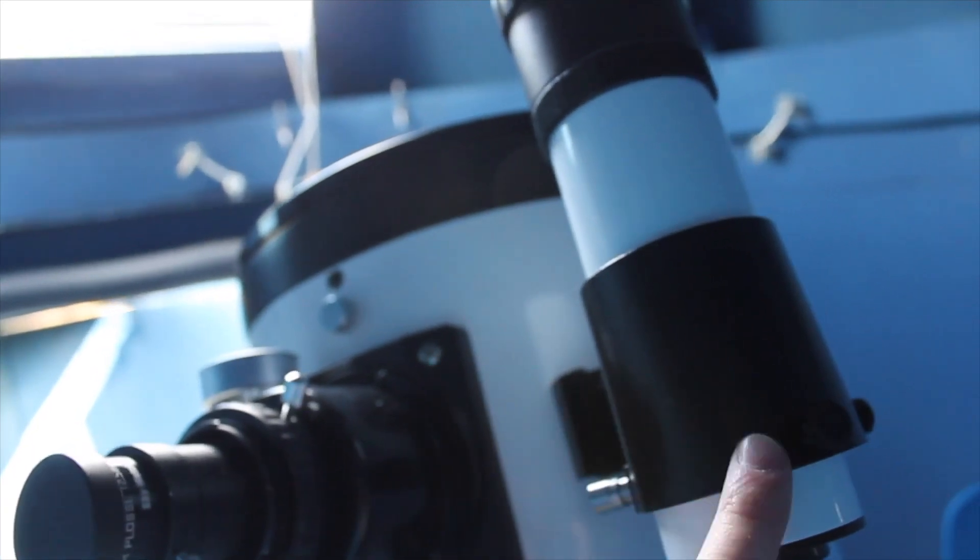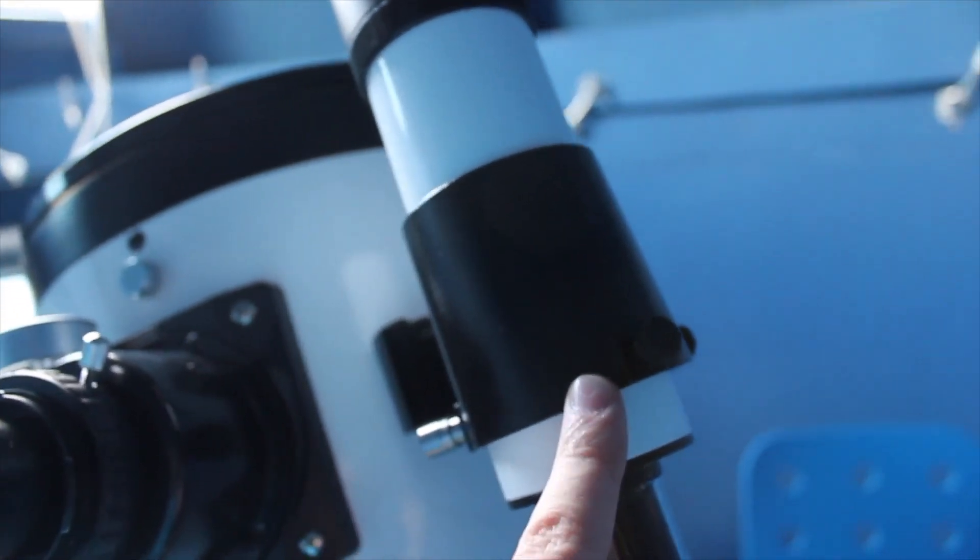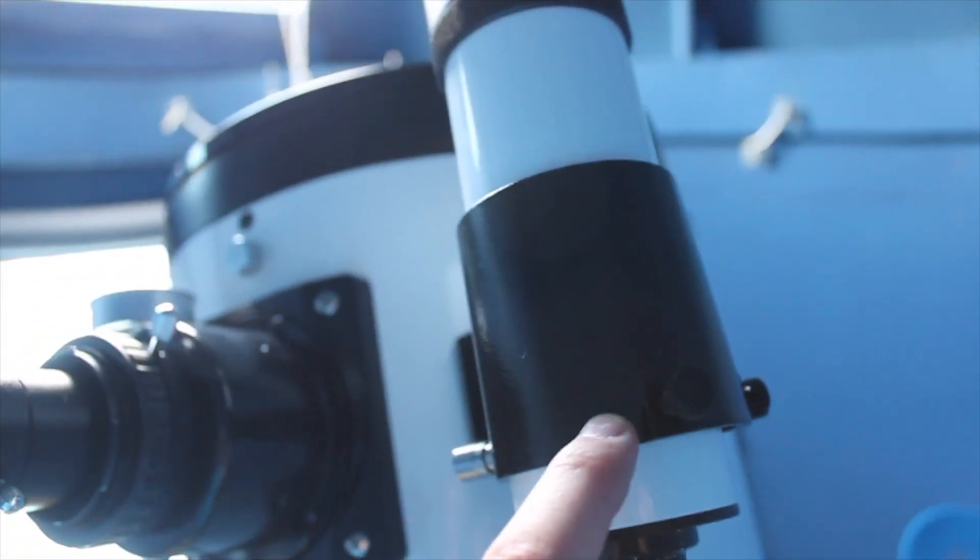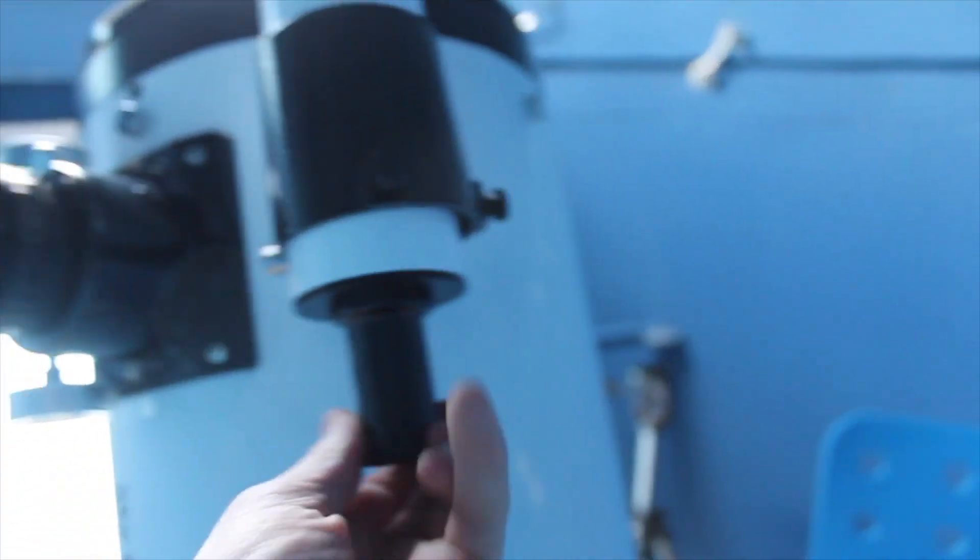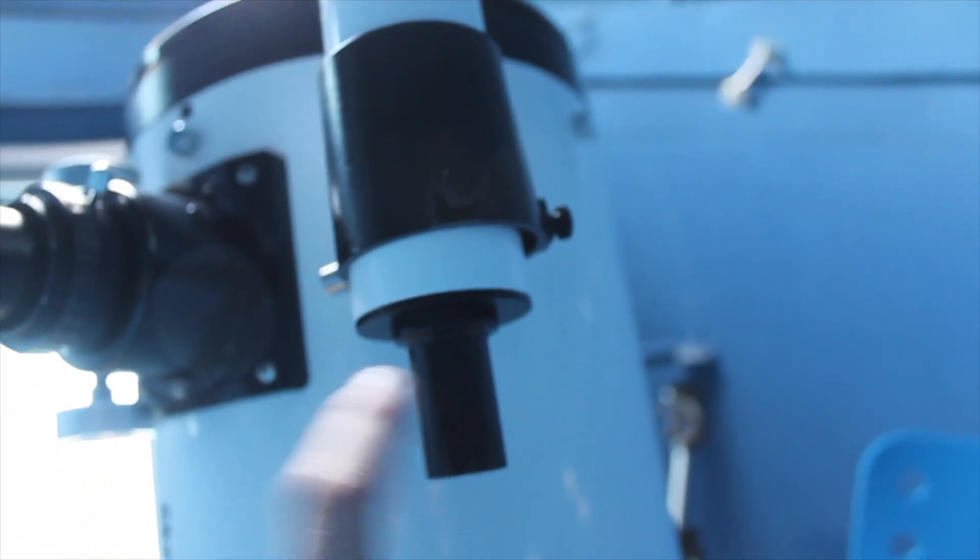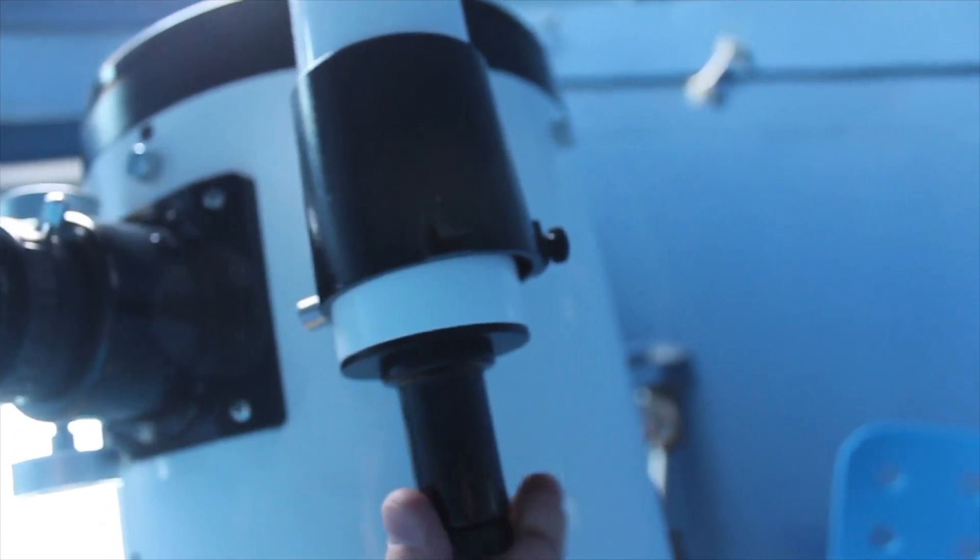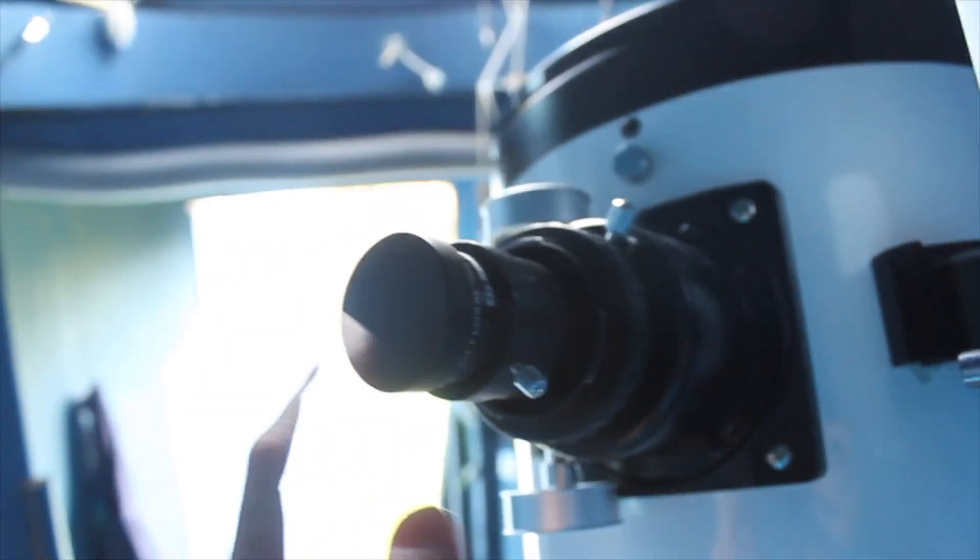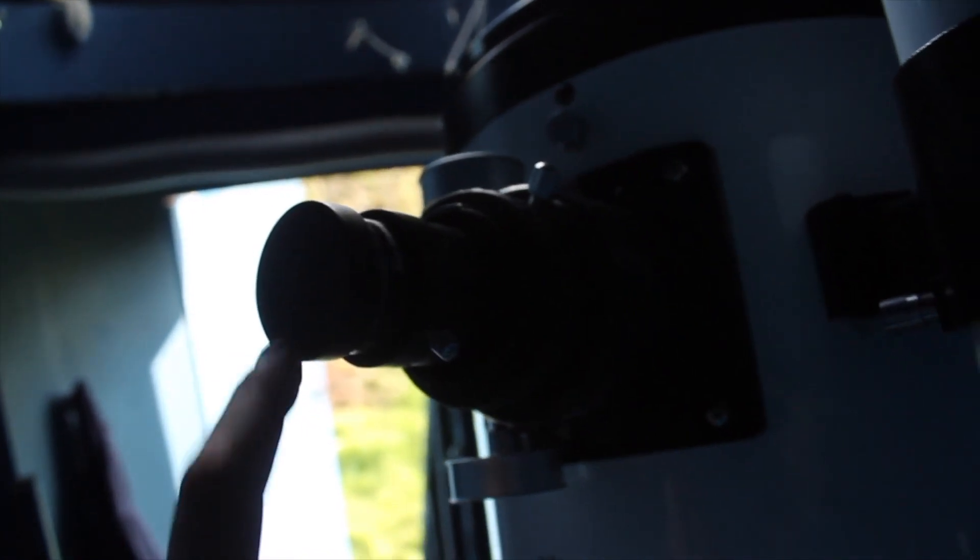This is the viewfinder. Before you look through the eyepiece, you make sure that this and these two things are aligned. If they are aligned, then that means that if you look through here then whatever you look through here will project onto here which is very handy.